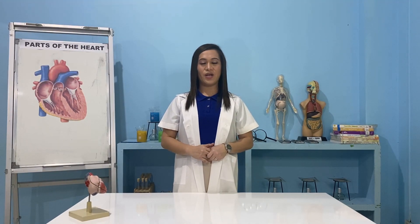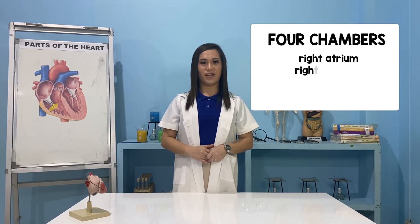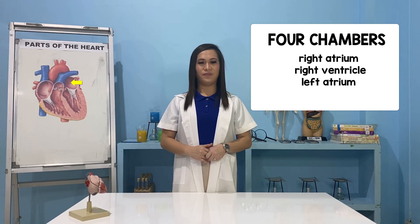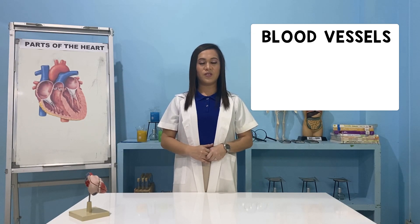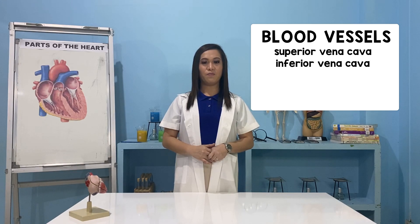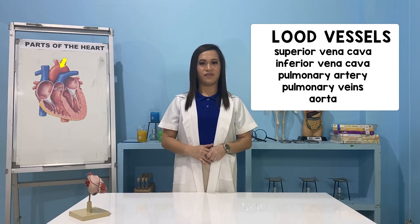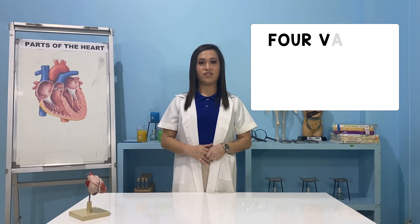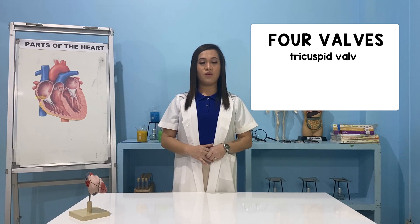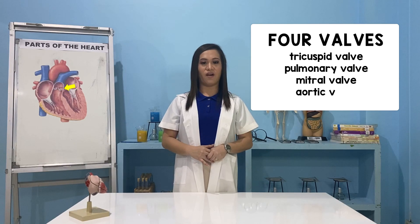Let's review again the different parts of the heart. We have the four chambers: right atrium, right ventricle, left atrium, and left ventricle. The blood vessels are: superior vena cava, inferior vena cava, pulmonary artery, pulmonary veins, and aorta. The four valves are: tricuspid valve, pulmonary valve, mitral valve, and aortic valve.